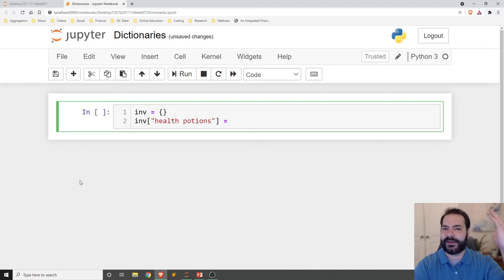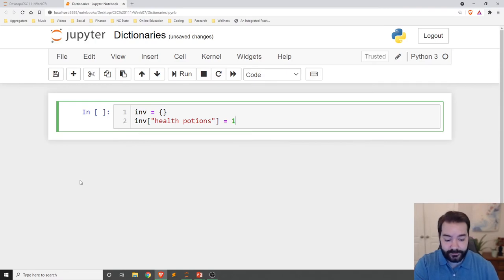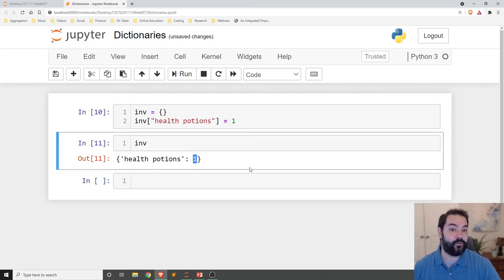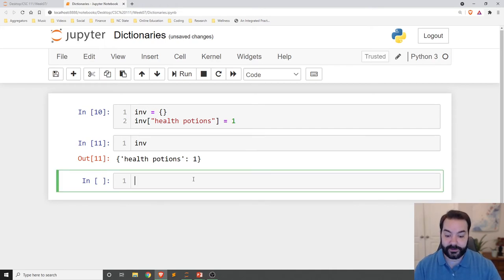And then we would assign it some value. So let's say it's the start of the game. We just load it up and we have one. They give us one to start off. As you can see, no errors are going on there. And if I take a look at my inventory, I can see, oh, I have an entry for health potions. And it has the value of one.